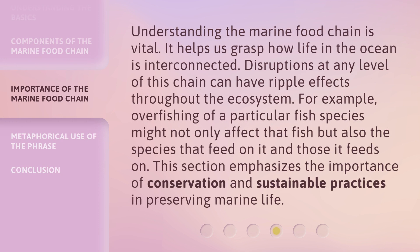Understanding the marine food chain is vital. It helps us grasp how life in the ocean is interconnected. Disruptions at any level of this chain can have ripple effects throughout the ecosystem. For example, overfishing of a particular fish species might not only affect that fish, but also the species that feed on it and those it feeds on. This emphasizes the importance of conservation and sustainable practices in preserving marine life.